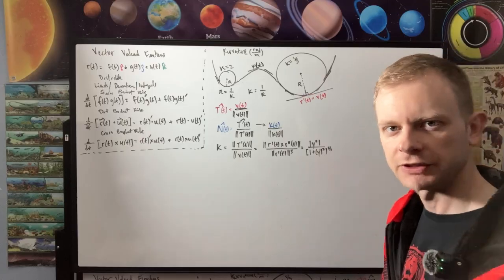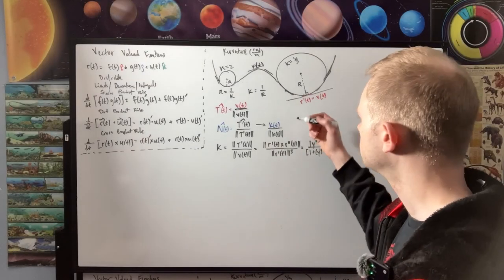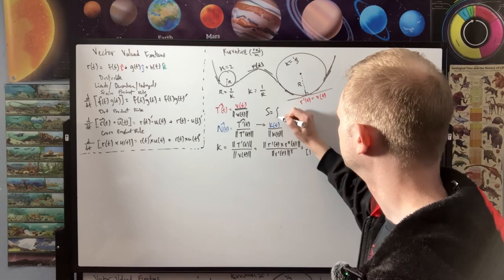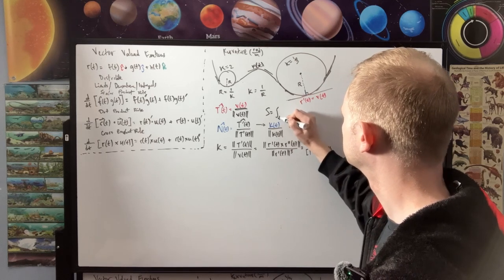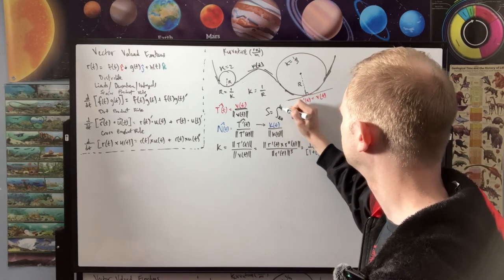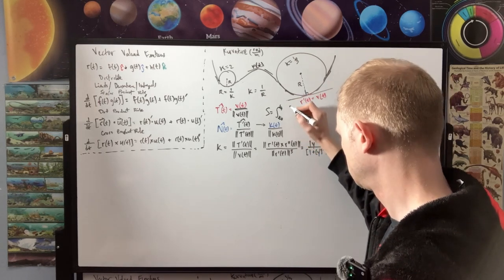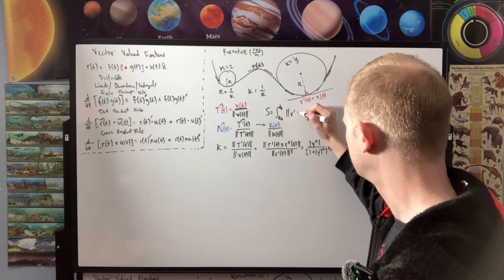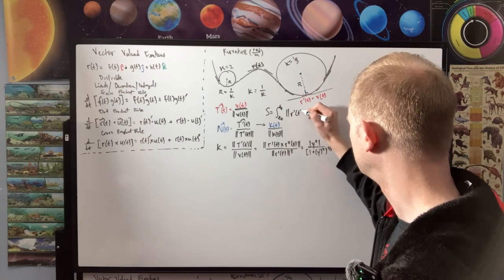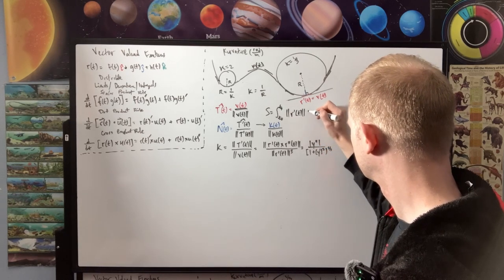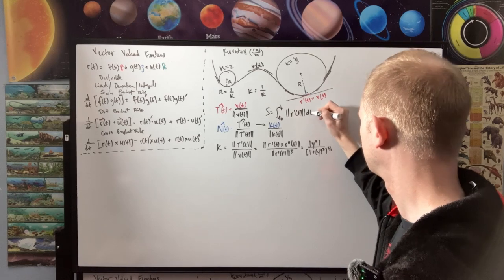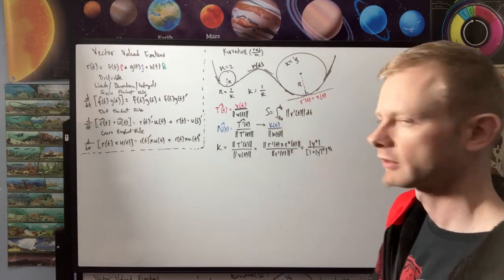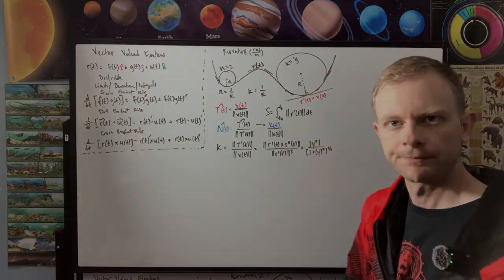Another useful equation is the arc length formula: s equals the integral from t_initial to t_final of the magnitude of the velocity |V(t)| dt. That gives you the distance — the arc length.